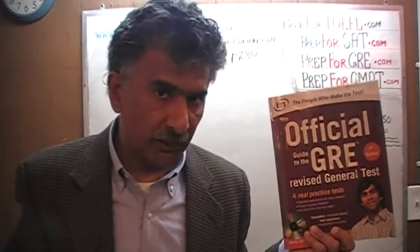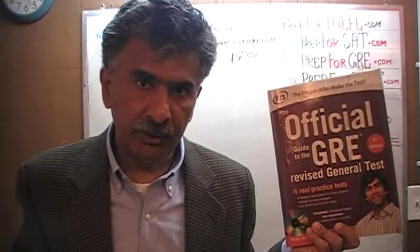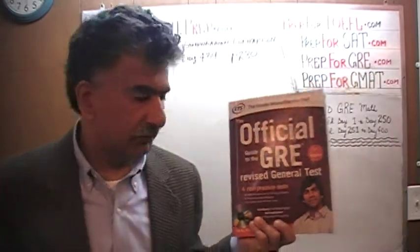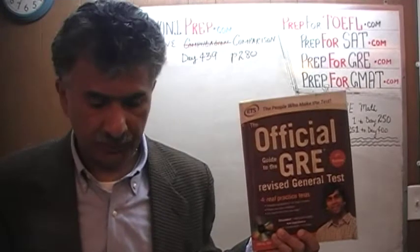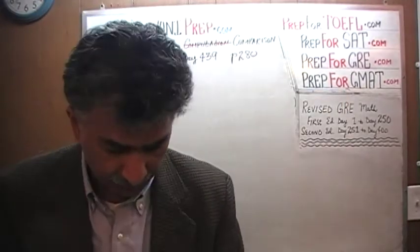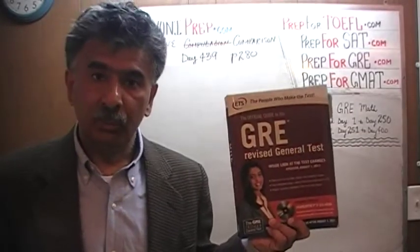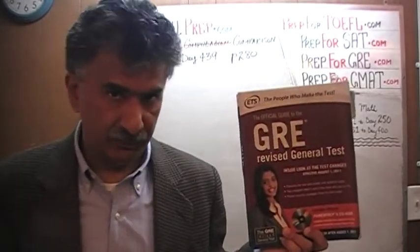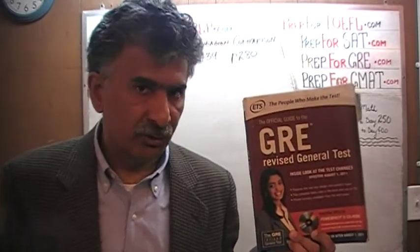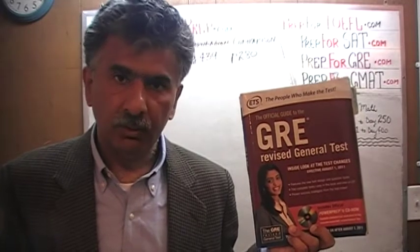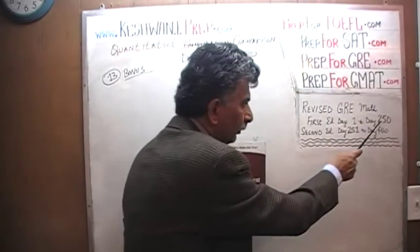We have finished solving almost all the problems from here. If there is any problem you have trouble with and you wish to watch the solution, you will find all the solutions to the math problems from day number 251 through 400. This book contains exactly the same problems in most cases, appearing on the same page numbers as those in the first edition of the revised GRE. You can find the original solutions from day number 1 through 250.